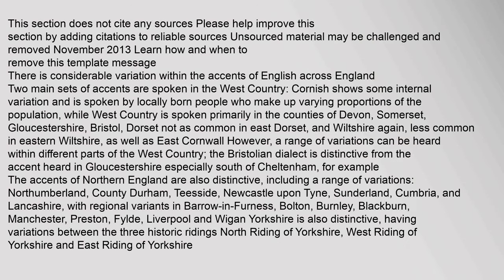There is considerable variation within the accents of English across England. Two main sets of accents are spoken in the West Country. Cornish shows some internal variation and is spoken by locally born people, while West Country is spoken primarily in the counties of Devon, Somerset, Gloucestershire, Bristol, Dorset, and Wiltshire, as well as East Cornwall. A range of variations can be heard within different parts of the West Country, and the Bristolian dialect is distinctive from the accent heard in Gloucestershire.